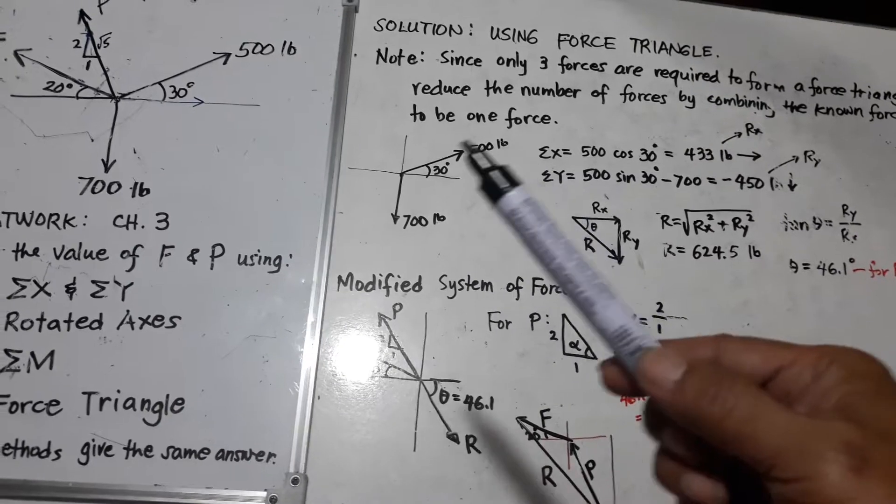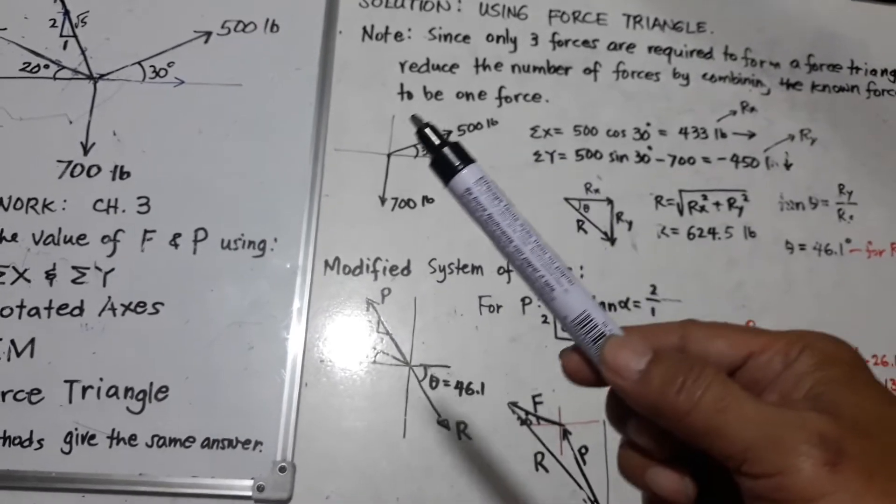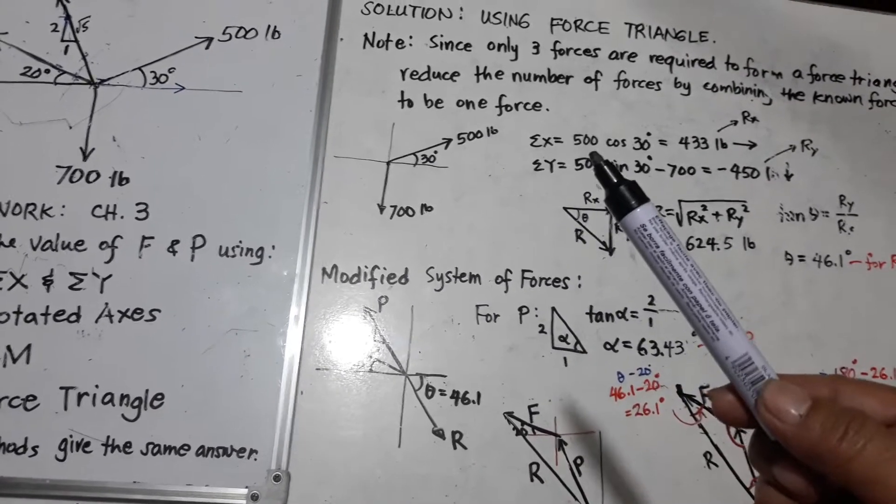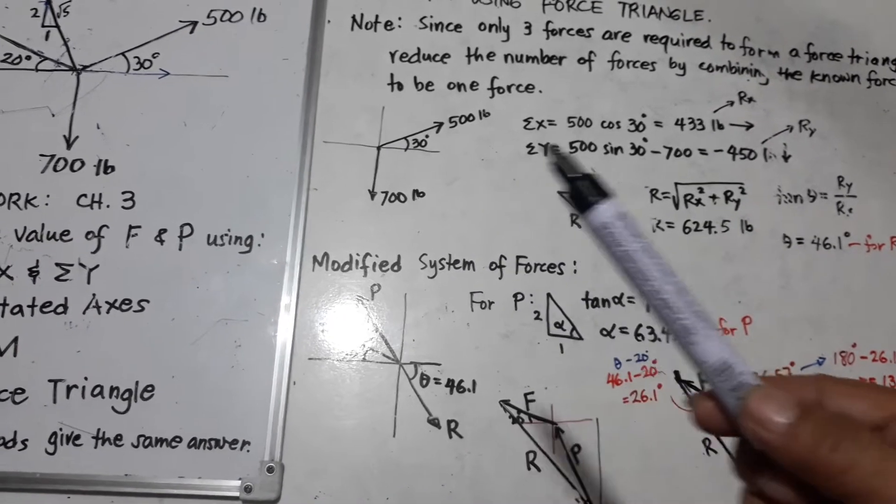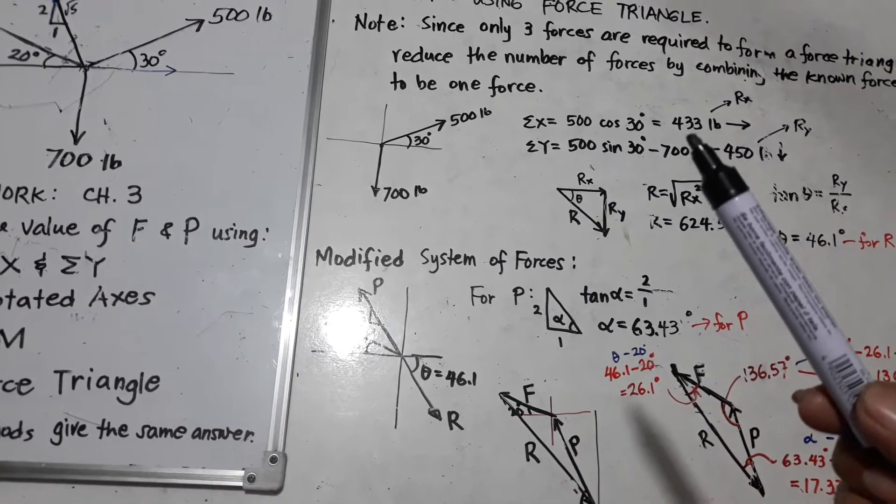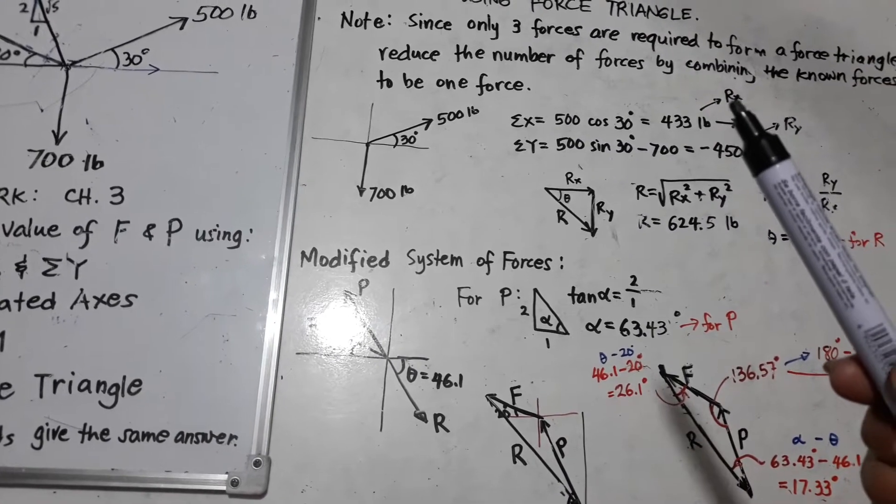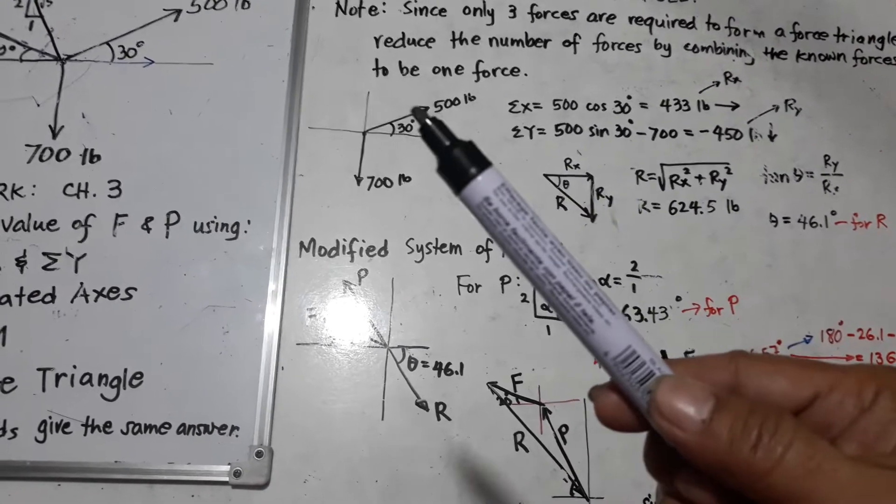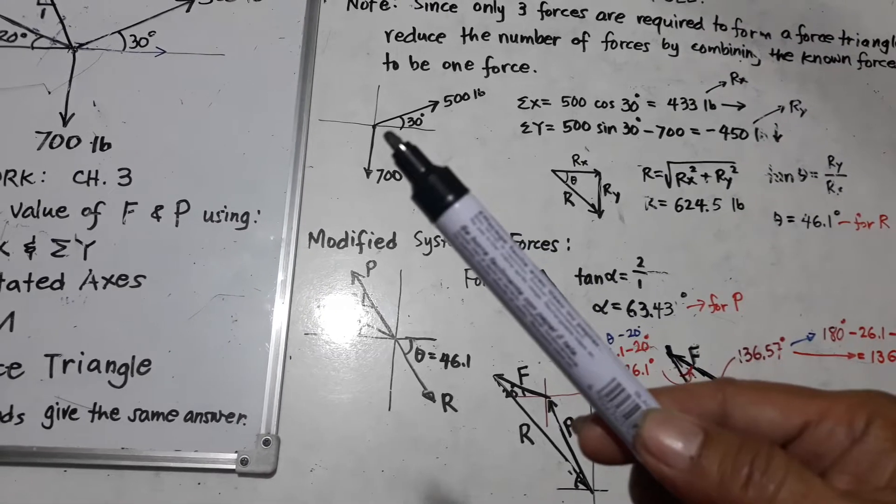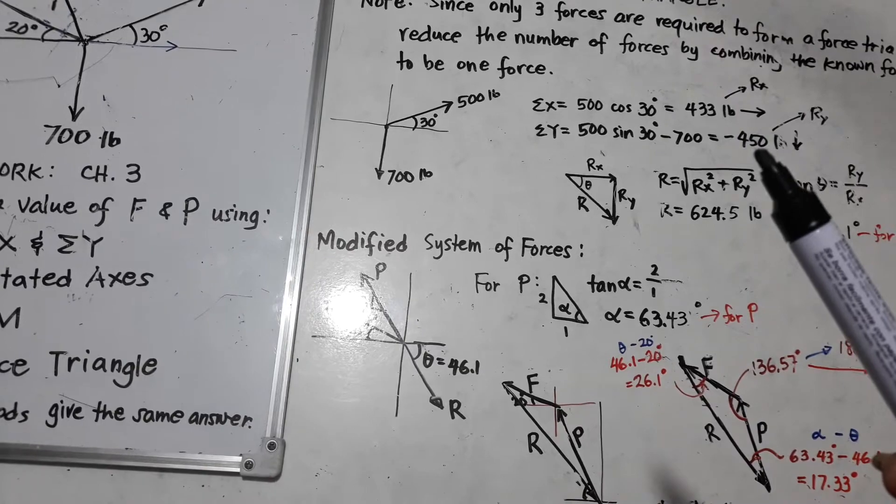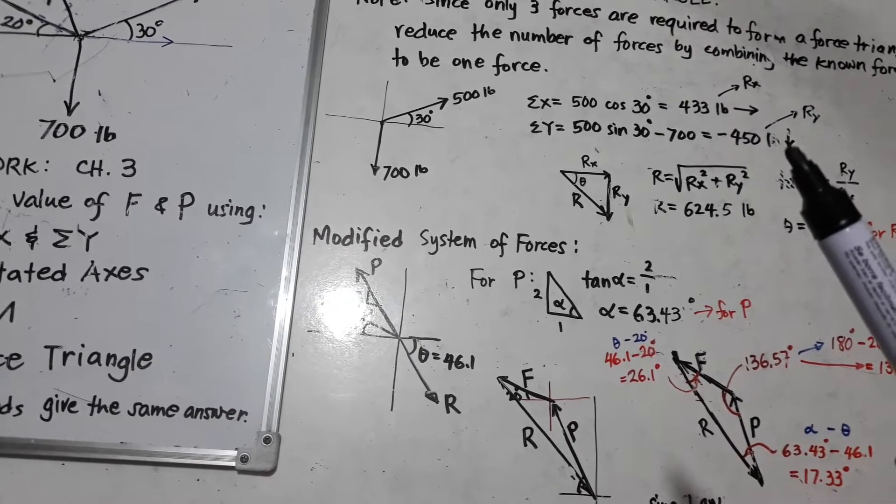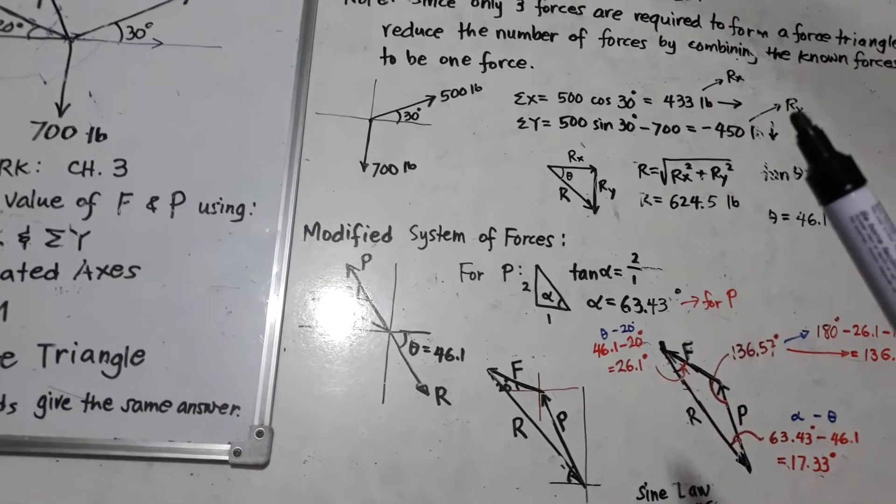It is shown here so that we can get the resultant of this by taking summation X, which is equal to 500 cosine 30. The answer is 433 pounds going to the right. We can call that one R sub X. And summation Y is 500 sine 30 minus 700 is equal to negative 450 pounds and that is going downward. We can call that one R sub Y.